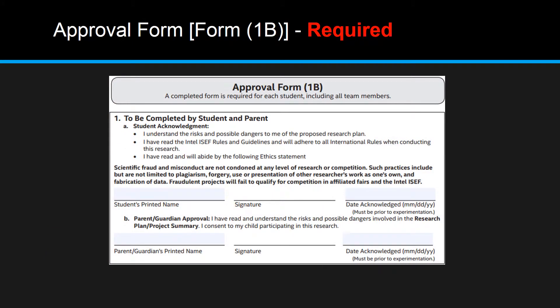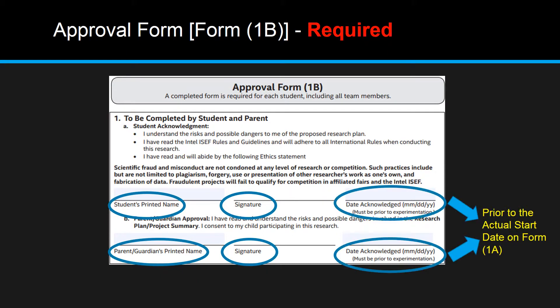The Approval Form 1B is a completed form for each student including all team members. Each student will need to fill out the form by printing their name, signing it, having their parent or legal guardian print and sign their name, as well as date it prior to the actual start date on Form 1A.